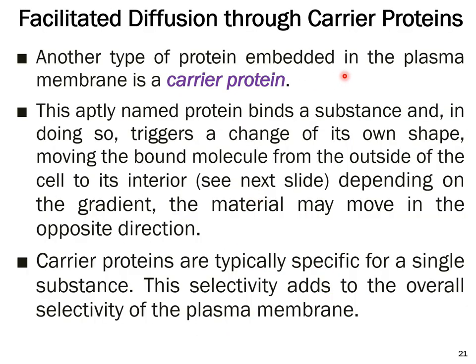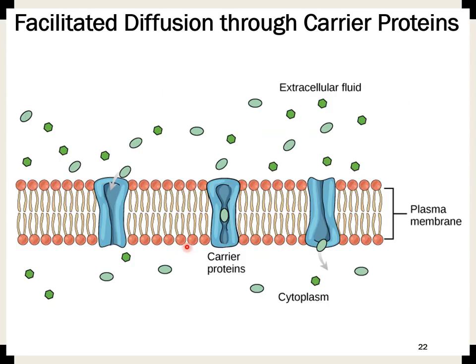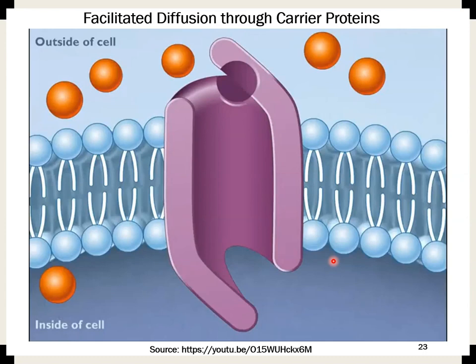Another type of protein embedded in the plasma membrane is a carrier protein. This protein binds a substance and in doing so triggers a change in its own shape, moving the bound molecule from the outside of the cell to its interior, releasing it there. Depending on the concentration gradient, the material may also move from inside the cell to the outside. Carrier proteins are typically specific for a single substance, which adds to the overall selectivity of the plasma membrane.